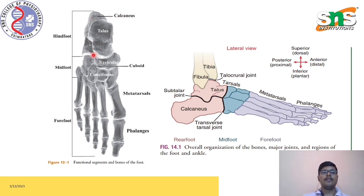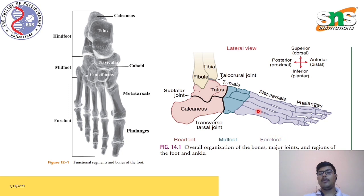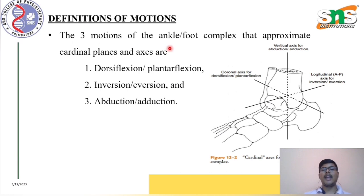This is the graphical representation of the divisions or functional segments of the foot. In the hindfoot you can see the calcaneus and talus; in the midfoot, the navicular, cuboid, and cuneiforms; and in the forefoot, the metatarsals and phalanges. The segments are differentiated by color — pink for the hindfoot, blue for the midfoot, and light blue for the forefoot — shown in both the lateral and superior views.